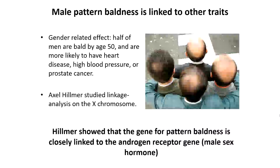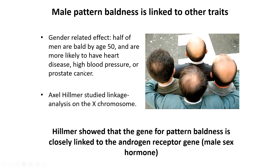One example of a linked gene is male pattern baldness. This trait is linked to other traits which are typically found and located on the X chromosome. It was difficult initially to determine this because this is a gender-related effect — something you really only see in males. Half of men are bald by the age of 50 and are more likely to have heart disease, high blood pressure, or prostate cancer. It turns out that the gene for pattern baldness is closely linked to an androgen receptor gene found on the X chromosome, and the androgen receptor gene is a male sex hormone. Male sex hormones can influence heart disease, blood pressure, and the probability of cancer in a male.